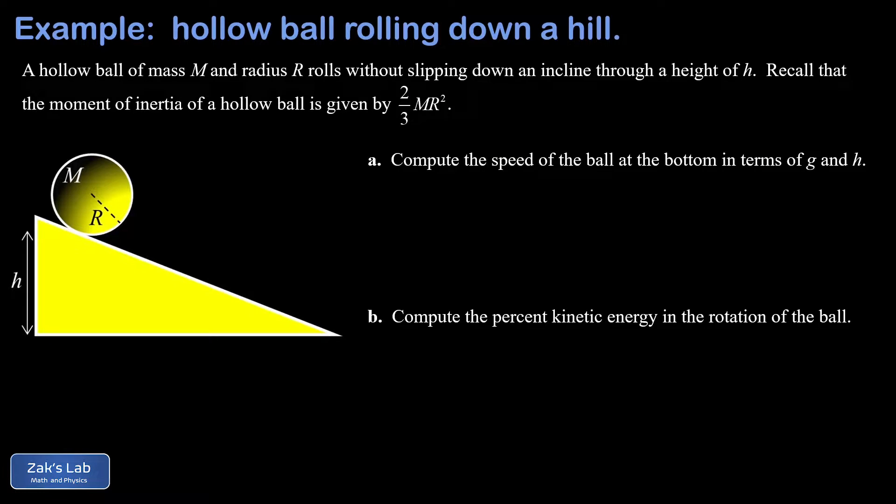In this video, we're analyzing the motion of a hollow ball rolling without slipping down a hill. We're told the ball rolls through a height of h, meaning its center of mass is dropped by a distance of h. We're reminded of the moment of inertia of a hollow ball that's two-thirds mR squared.